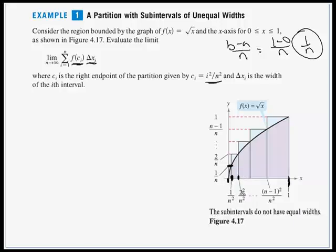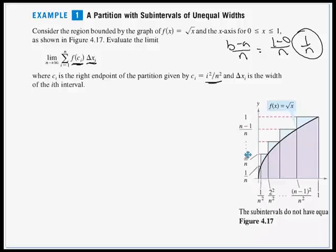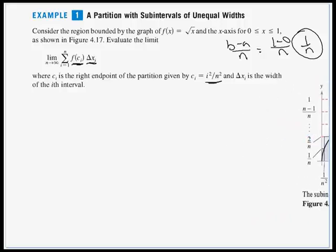Our next endpoint is going to be 2 squared over n squared, then 3 squared over n squared, 4 squared over n squared, all the way up to n minus 1 quantity squared over n squared, and finally our last right endpoint is 1 itself. So these intervals are of non-equal width, but that doesn't matter. When we saw in the previous sections, our lower and upper sums both come to the same limit, and that also holds true for intervals of different widths.